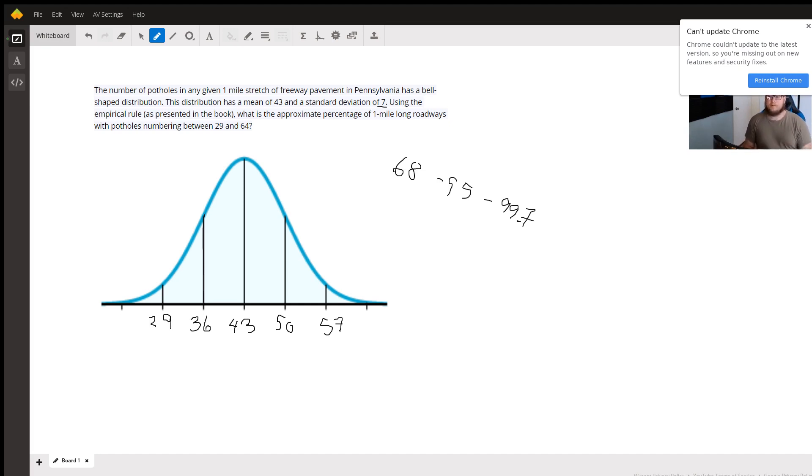Well, for this problem, this problem has something tricky in it. They're asking us to figure out what is the percentage of roads containing between 29 and 64 potholes? Well, if you notice, 29 is two standard deviations below the mean,